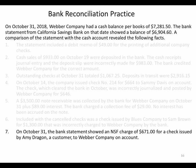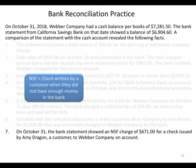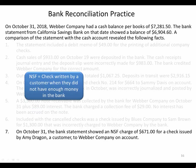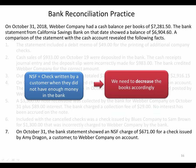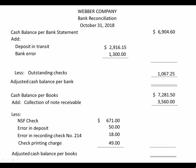The last item, number seven: on October 31 the bank statement showed an NSF charge of $671 for a check issued by Amy Dragon. Amy owed us money and paid us with a check, but that check bounced. An NSF check is when a customer writes a check to us but doesn't have enough money in their bank to cover it. When we received Amy's check we increased cash, but we didn't actually get that cash because she didn't have it. So now we need to decrease our books accordingly on our bank reconciliation. We'll go back to Amy and ask for a new check, but right now that money needs to come out of our cash balance per books.